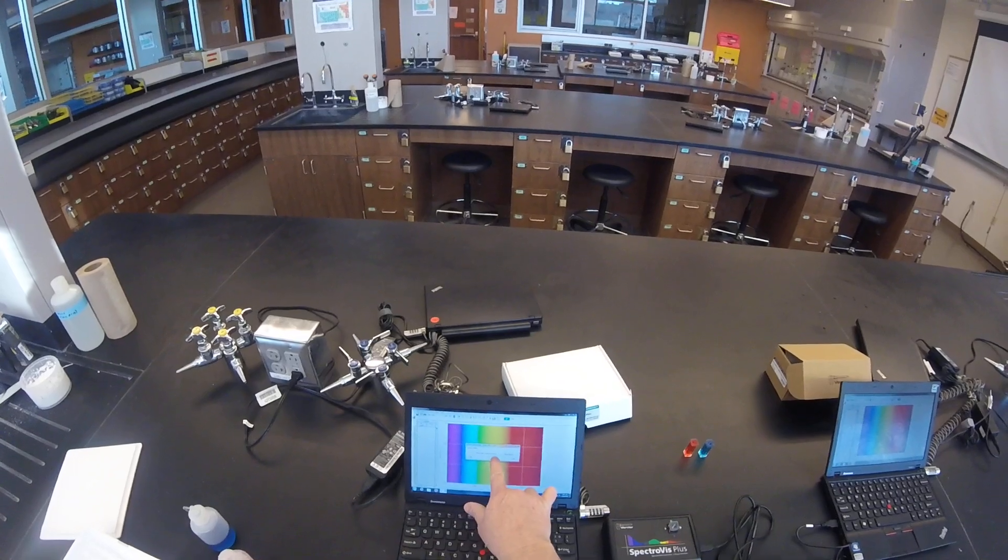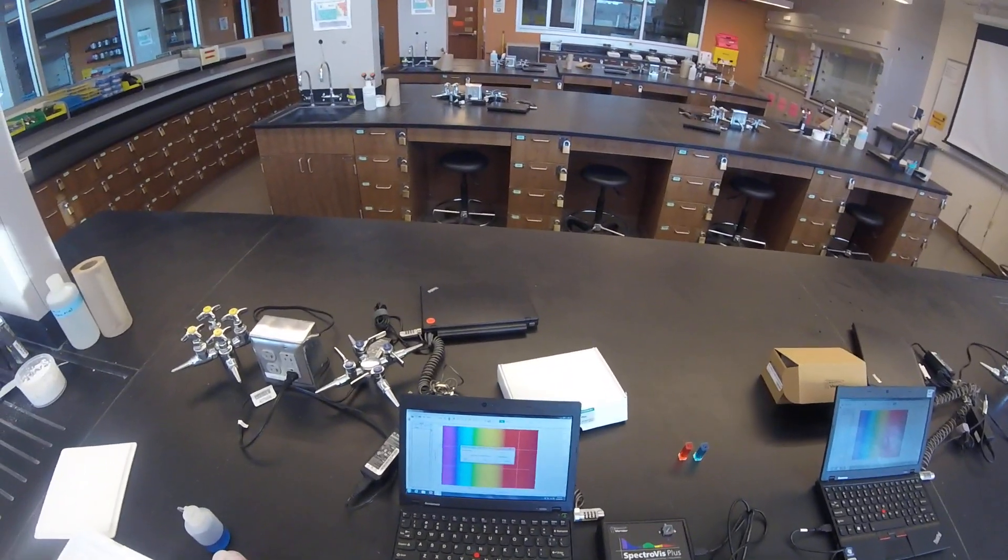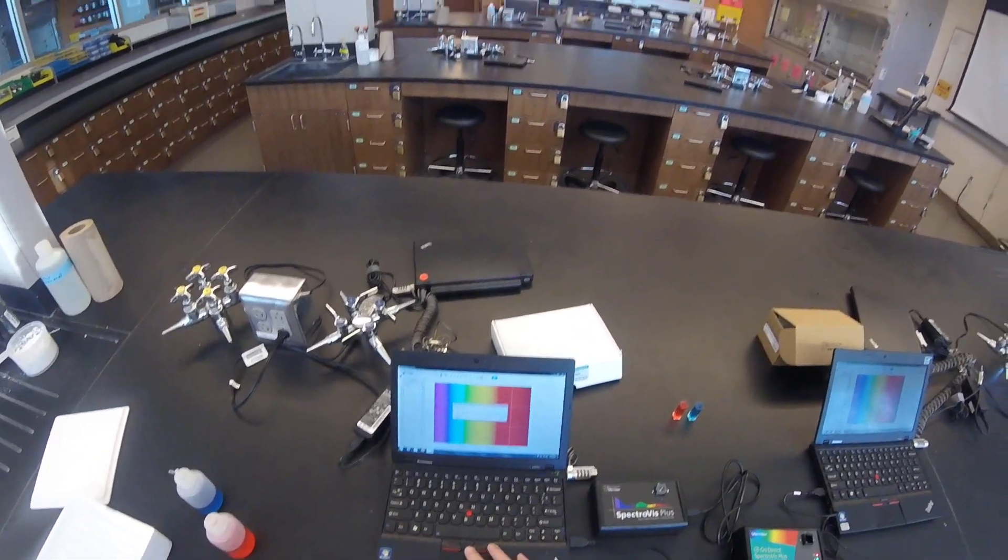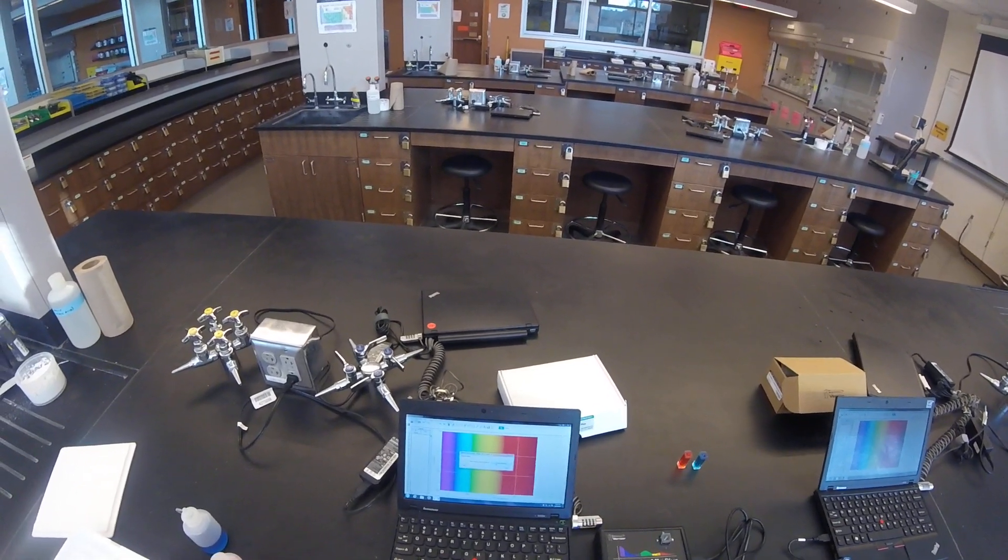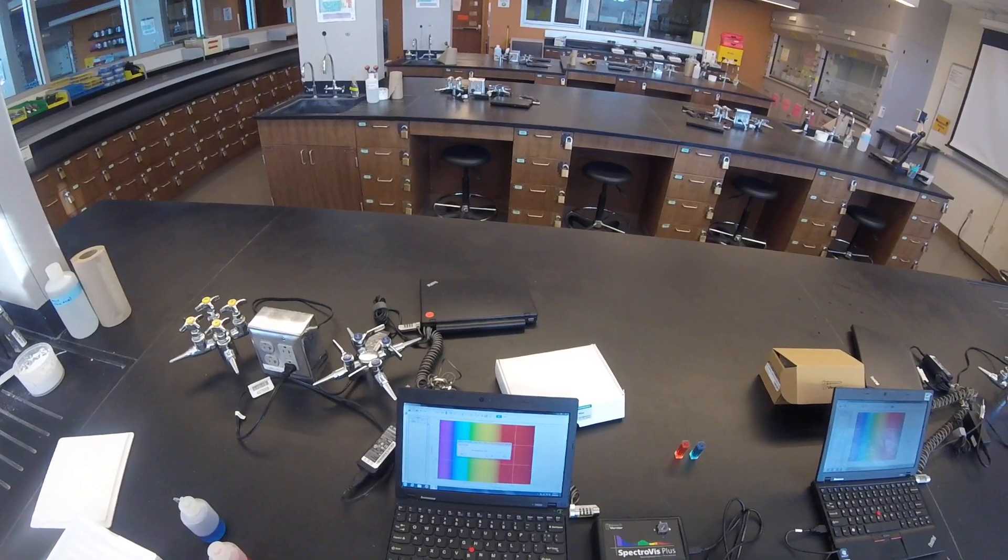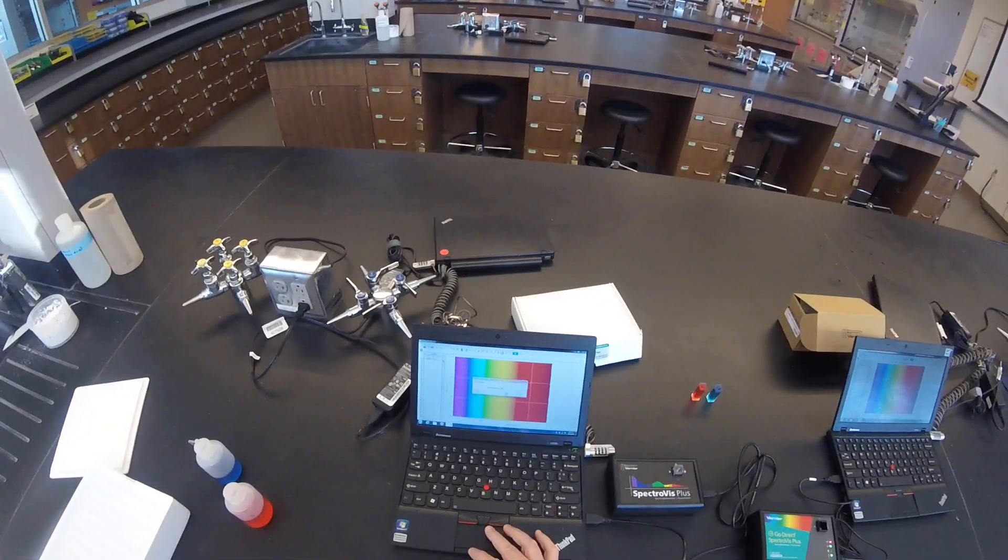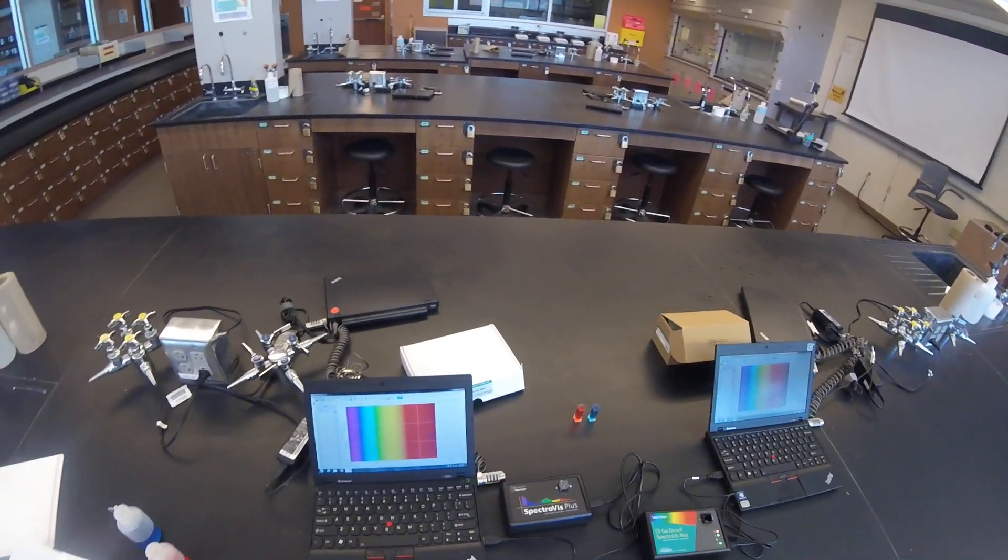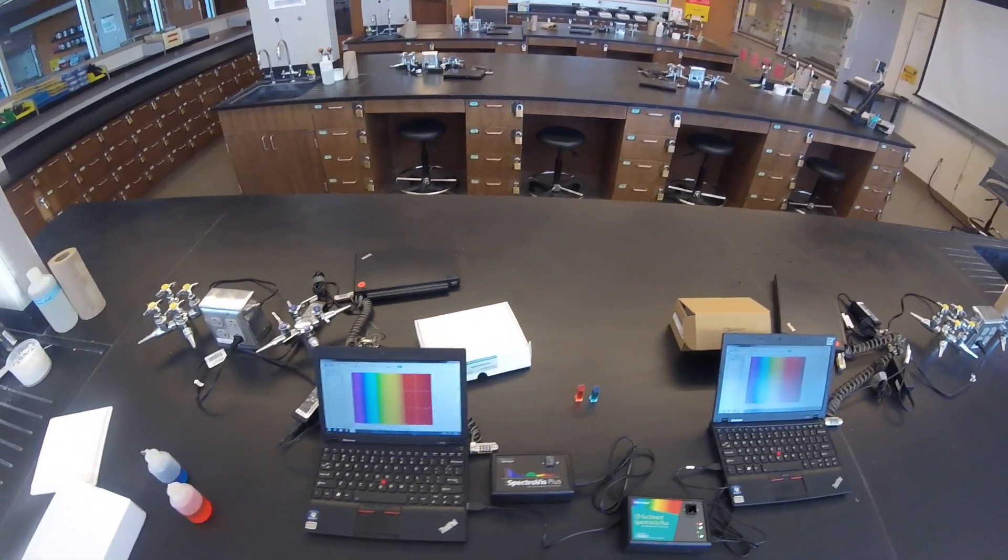It will tell you to place a blank cuvette in the device. My blank is already in there. With my blank solution, we'll click Finish Calibration. Give it a few seconds. And the OK button becomes active. And we click OK. We're now ready to actually use the SpectraVis Plus.